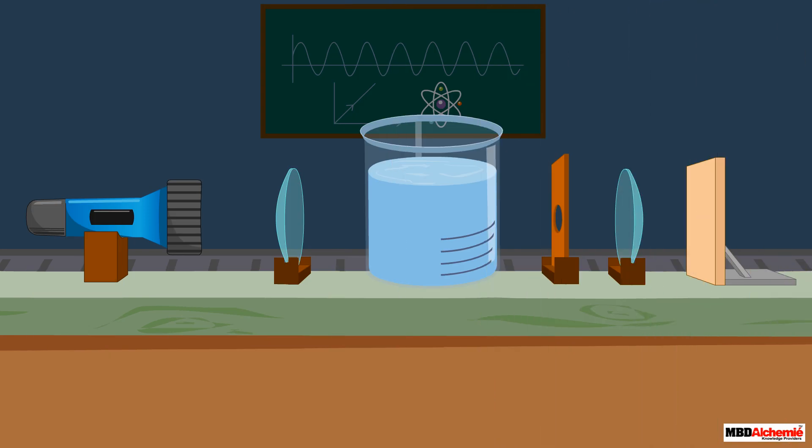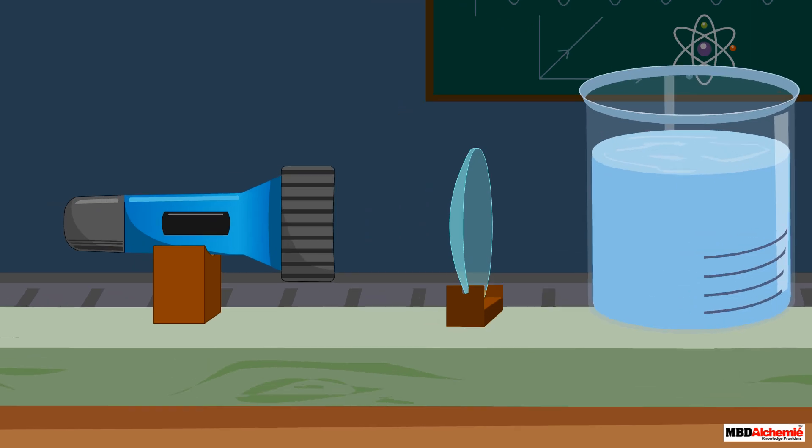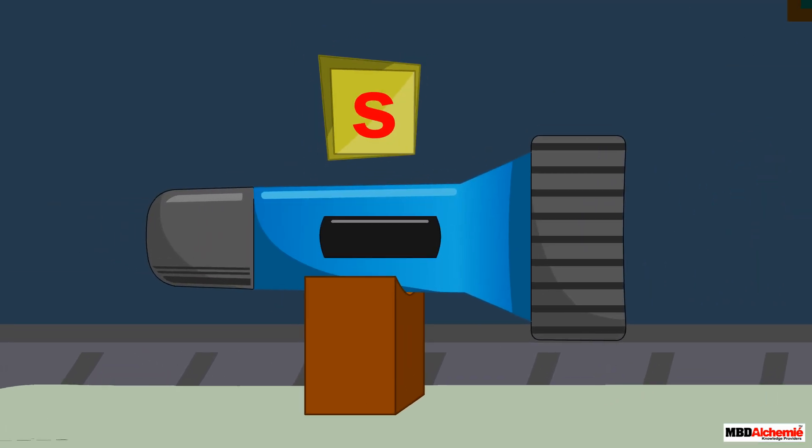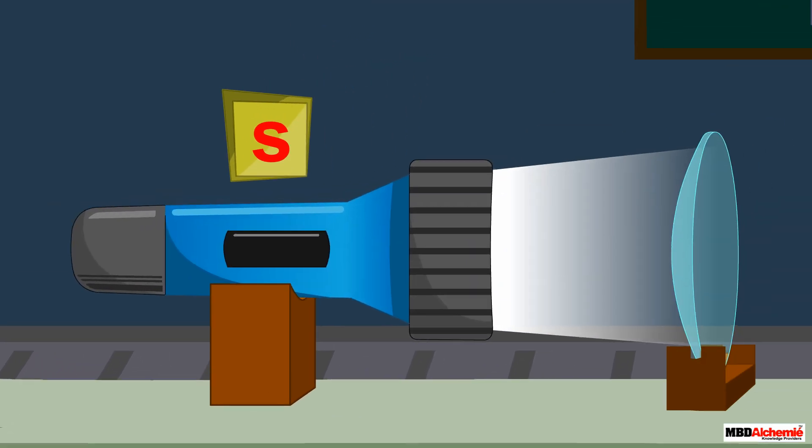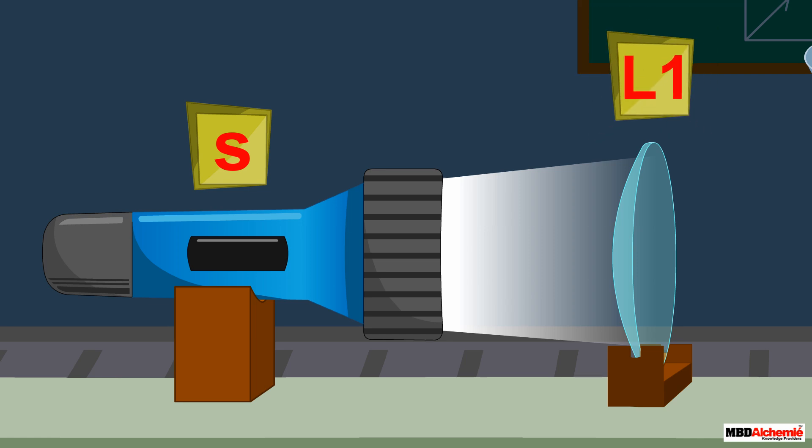Let us do an activity to observe the Tyndall effect. For this, place a strong source S of white light at the focus of a converging lens L1. This lens provides a parallel beam of light.